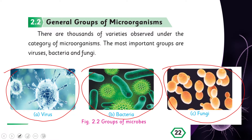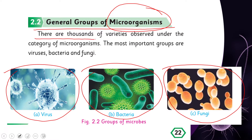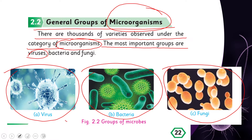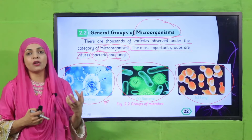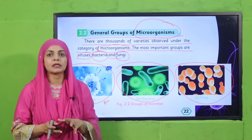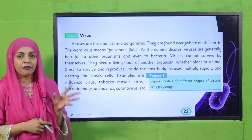General groups of microorganisms — today we will discuss about this. There are thousands of varieties observed under the category of microorganisms. The most important groups are viruses, bacteria, and fungi. So what are the three groups? Viruses, bacteria, and fungi — these are the three main groups of microorganisms. But today we will only discuss about viruses.